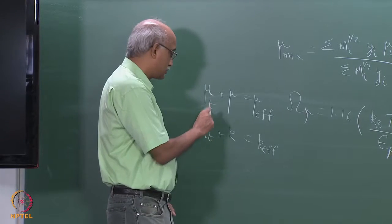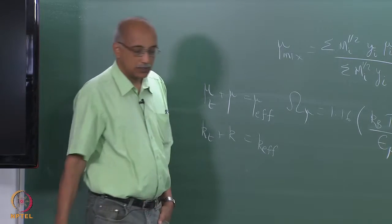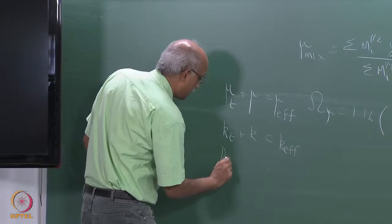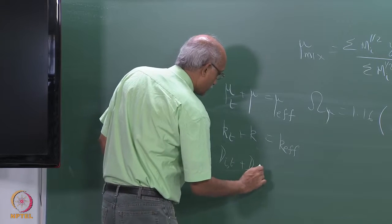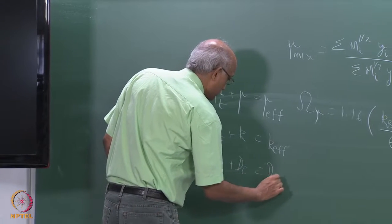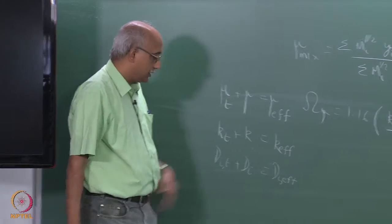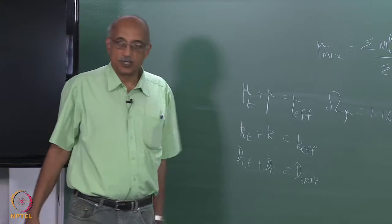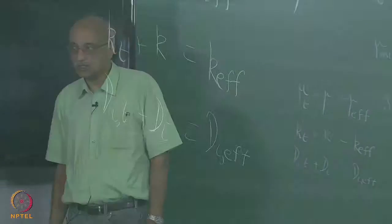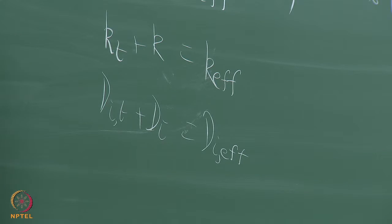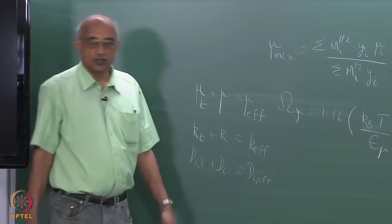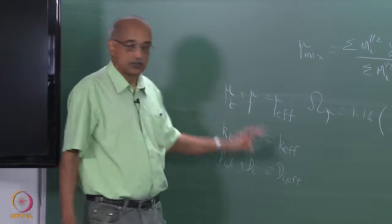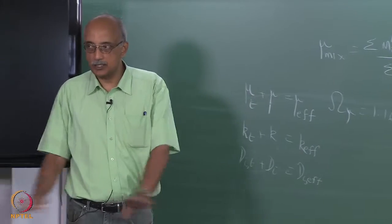Similarly for diffusivity, D_i_effective = D_i + D_i_T, where D_i is the Fick diffusivity under laminar conditions and D_i_T is the turbulence-enhanced diffusivity. An important point: D_i_T has absolutely no relation to D_i. Similarly, K_T has no relation to K, and mu_T has no relation to mu — they are completely independent of each other.